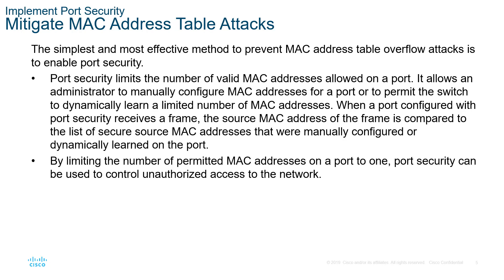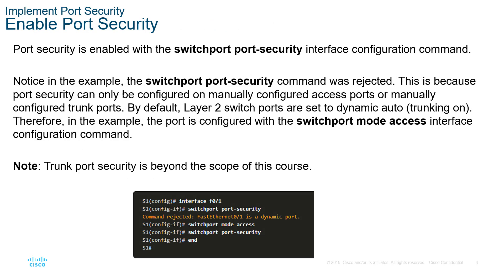Port security is used to control authorized access to the network via MAC addresses. To enable port security, we have to go to a statically assigned interface — for example, interface FastEthernet 0/1 — and hard-code it to be an access port. From there, we issue the switchport port-security command. Port security actually enables that function, but it has to be in switchport mode and set to an access port.